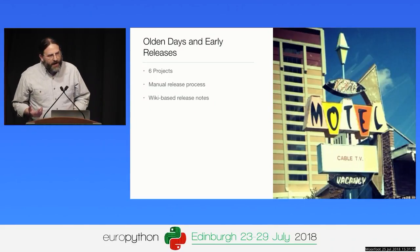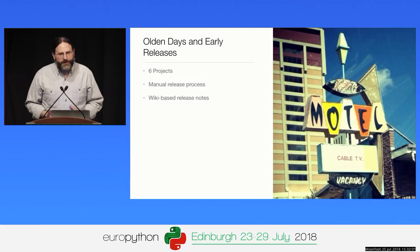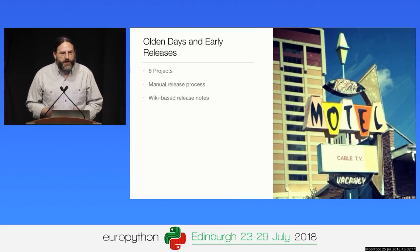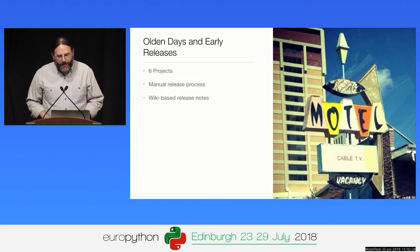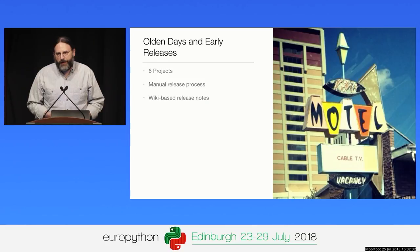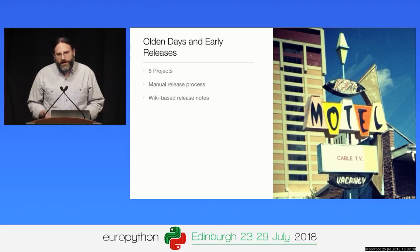We created Reno early in 2015 as our community was growing — we were seeing an increase not just in the number of different services and components, but also in contributors and contributions coming in. We started out with six or seven service projects, each managing an API and a Python client library. In the early days, each project was responsible for doing their own thing with release notes, so we had a wiki and people would manually put notes into the wiki.